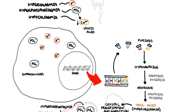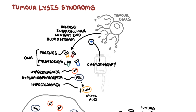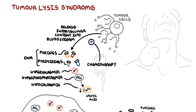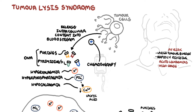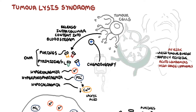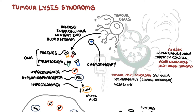Not all cancer patients are at equal risk of developing tumor lysis syndrome. Patients with a large tumor burden of cancer cells and/or tumors that typically have rapidly dividing cells, such as acute leukemia or high-grade lymphomas, as well as tumors that are highly responsive to therapy, are at the greatest risk. Tumor lysis syndrome can occur spontaneously before cancer treatment, but is more common within weeks of starting treatment.